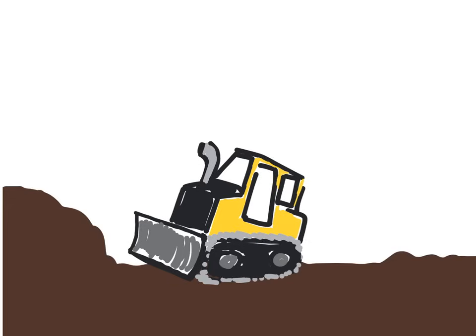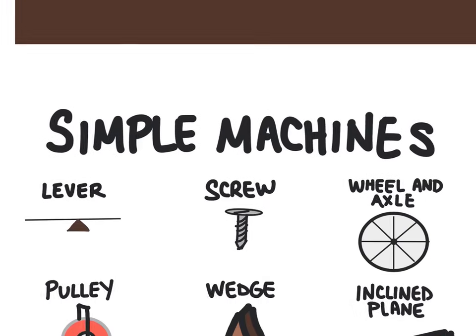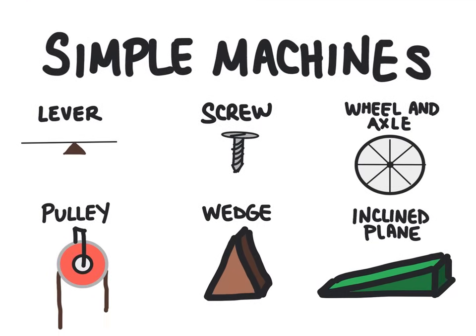To keep things simple, we're going to discuss simple machines. There are six of them, and these are all machines that are going to work on an object in just one movement of the machine. The simple machines are the lever, the pulley, the screw, the wheel and axle, the wedge, and the inclined plane.